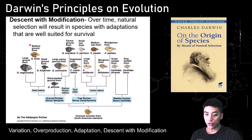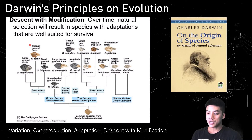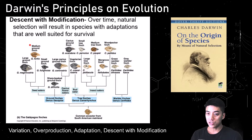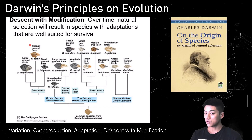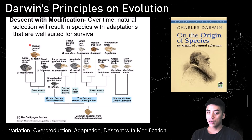If you have a broad beak, that was designed for smashing seeds; if you have more nimble beaks, that was designed for eating insects. These are the principles on evolution as described by Charles Darwin in On the Origin of Species: variation, overproduction, adaptation, and descent with modification. Over time, you have natural selection — only the strong survive — meaning species with adaptations suited for survival end up reproducing and allow the species to go on.